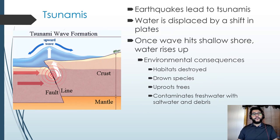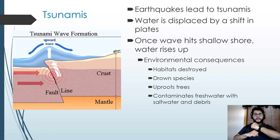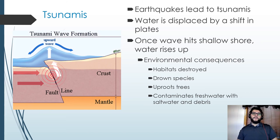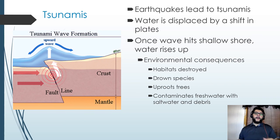Another problem we see is tsunamis. If there's an earthquake at the bottom of the ocean, think of the ocean floor as level, and then suddenly when one side drops, that causes displacement and the water moves upward. In the middle of the ocean you won't see it, but once it hits the shallow shore, the water pushes back and rises up, causing a tsunami. The water will pull back on shore, and as that wave moves through, it crashes onto the surface.